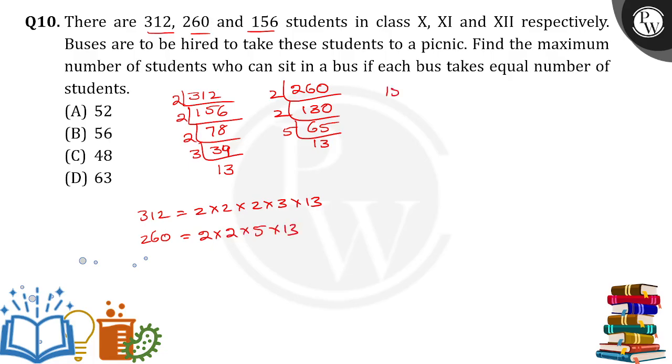Now last one is 156 students. So 2 cancels for 78 times. Again, 2 cancels for 39 times. 3 cancels for 13 times. So 156 is equal to 2 into 2 into 3 into 13.